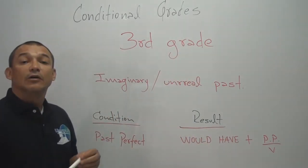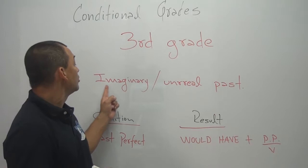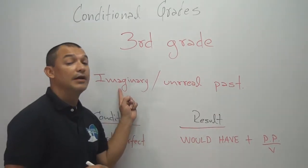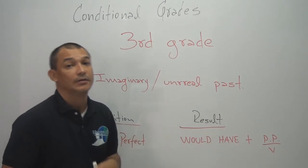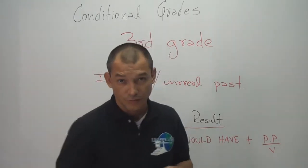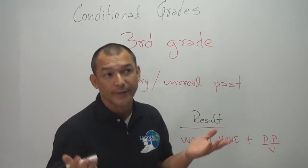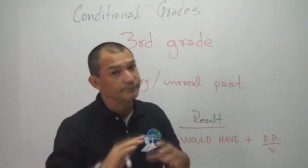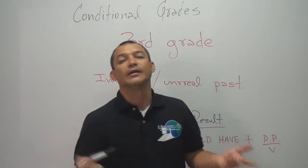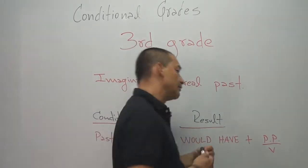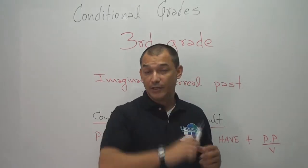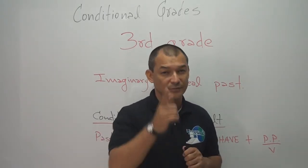¿Qué es el tercer grado condicional? Ese grado condicional me habla de un pasado imaginario o irreal. Estoy imaginando dos cosas que ocurrieron en el pasado. Obviamente me las estoy imaginando, no pasaron. O hablo del pasado de una manera irreal. Vamos a mirar. Es muy sencillo, es muy fácil. Y de hecho, lo usamos mucho. Ya van a ver.